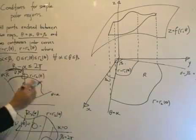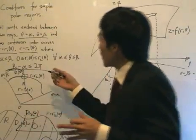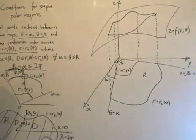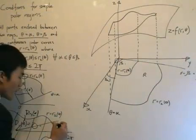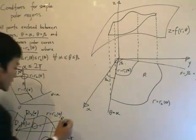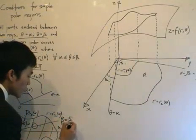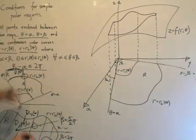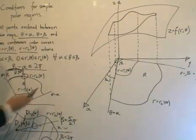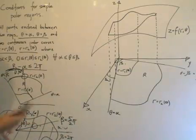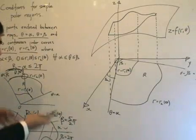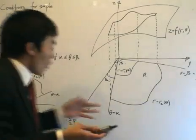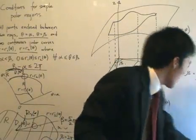The last condition is that beta minus alpha must be less than or equal to 2pi. This means the ray cannot overshoot alpha — if beta were, say, 5/2 times pi, that would be more than 2pi and you'd be double-counting the region, which makes the calculations messy. So we restrict ourselves to simple regions throughout.